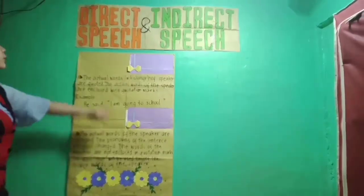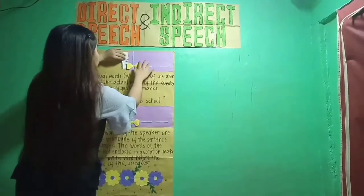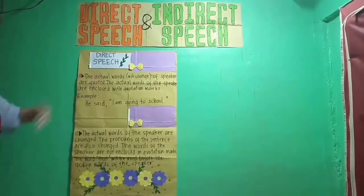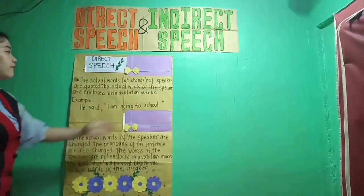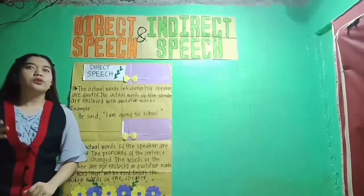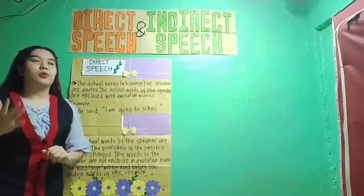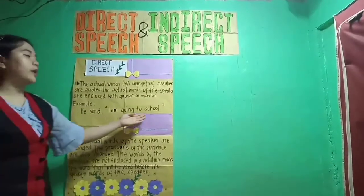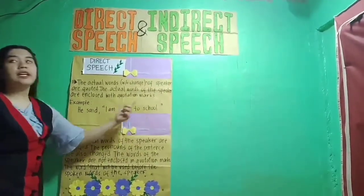Let's start with direct speech. In direct speech, the actual words of the speaker are quoted without change. The actual words are enclosed with quotation marks. Direct speech also uses a comma or colon after the word 'said' to introduce the spoken words. For example: He said, 'I am going to school.' As you can see, quotation marks are used for the spoken words.